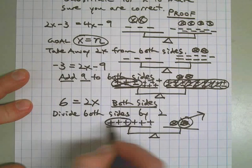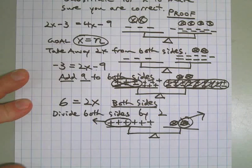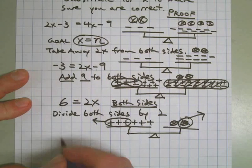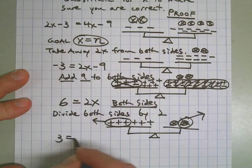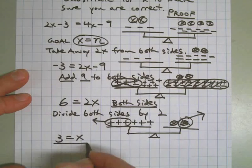And then I'm going to take half of these and get rid of them. What do I have left? I have 3 left on one side, x left on the other side. I have solved the equation.